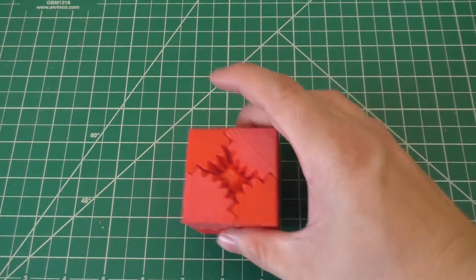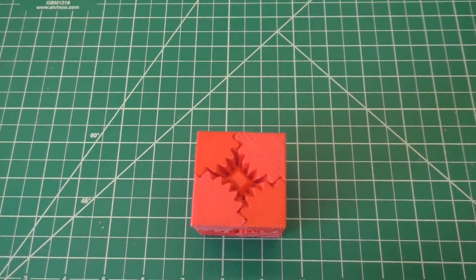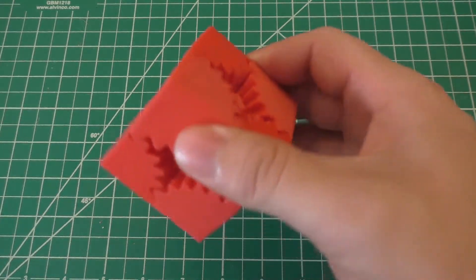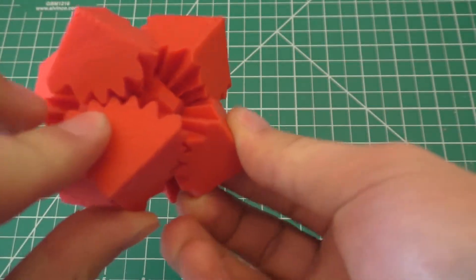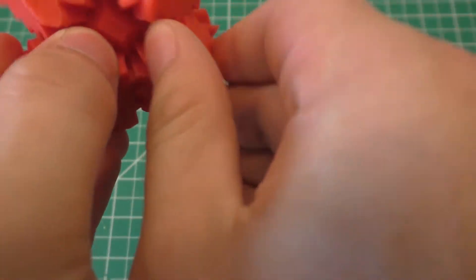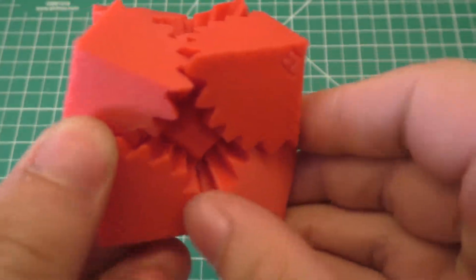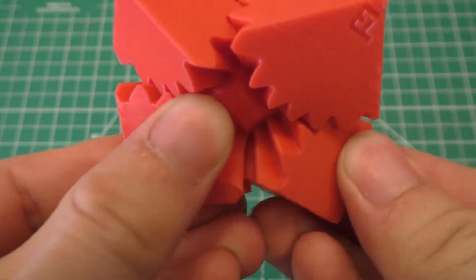In a previous video, I made this little guy. This is just something that I found off of Thingiverse, but this is a gear cube. And what you can do with it here, if I can get a hold of it, it just turns like so. It's a little decorative piece.